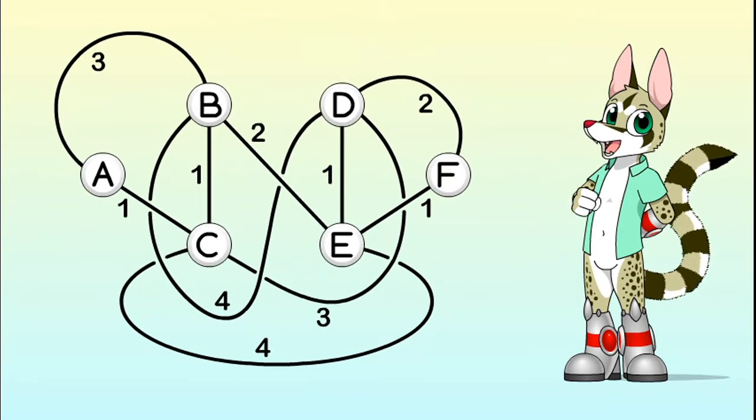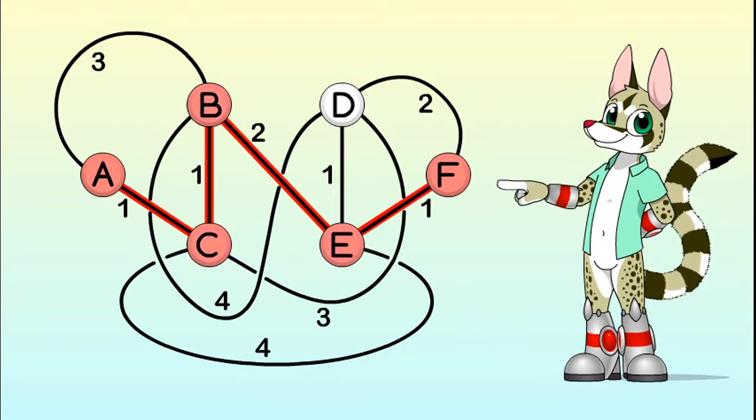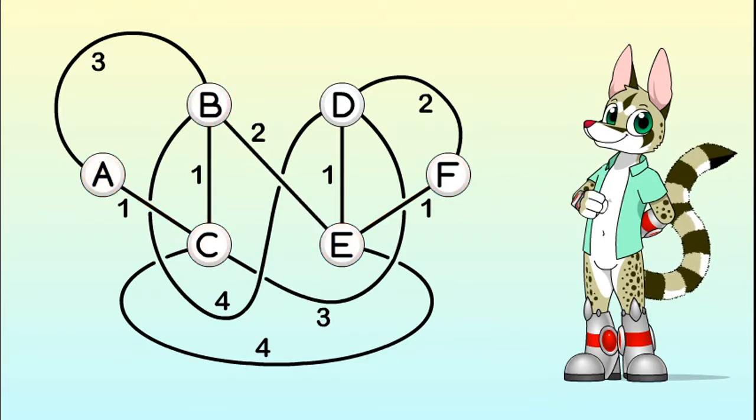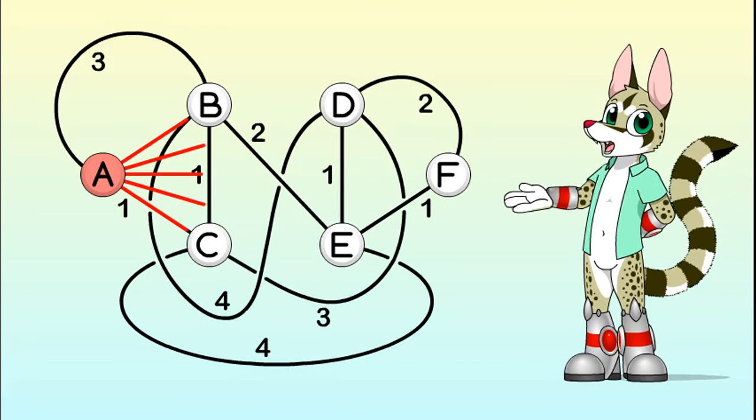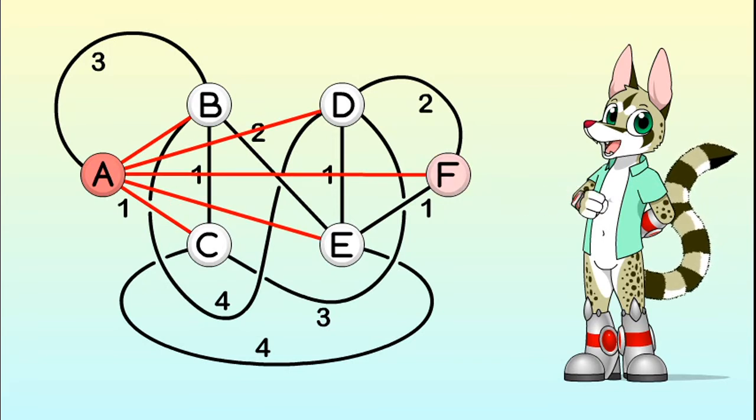Suppose we want to go from vertex A to vertex F in this simple graph. As people, we can clearly see that the shortest route will be A, C, B, E, F. Using Dijkstra's algorithm, a computer can find that out too, by calculating the shortest distance from our starting point to every other vertex until it gets to its goal.